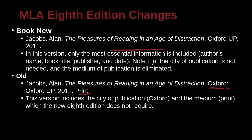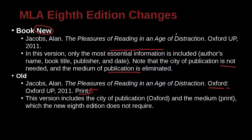Something quite different is about the city. The city of publication is no longer needed, and the medium of publication is eliminated. It used to be required to include very specific details such as the city — Oxford — and the medium, such as 'print' for a printed book. Now it's much more simplified: the author, the name of the book, then Oxford UP as the publisher, and then the date.